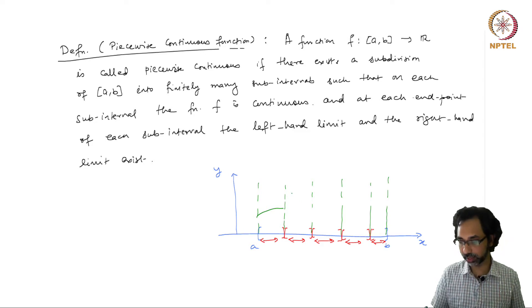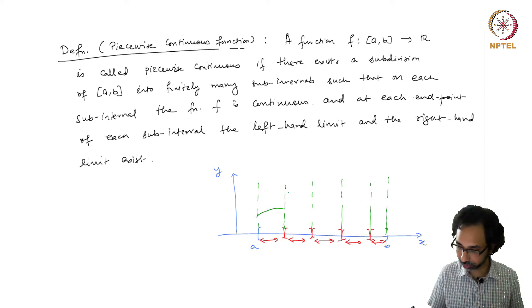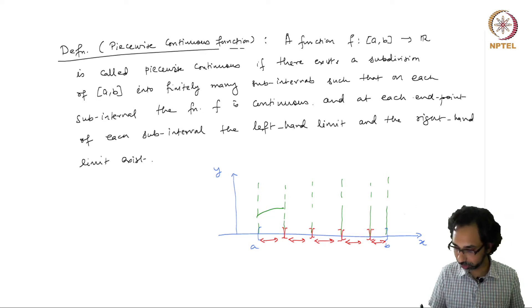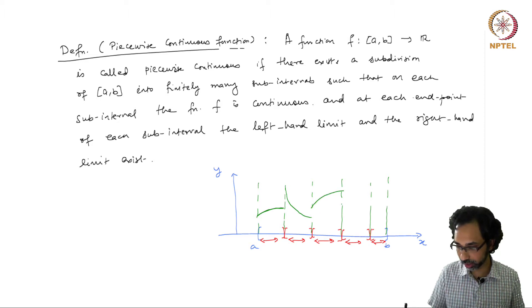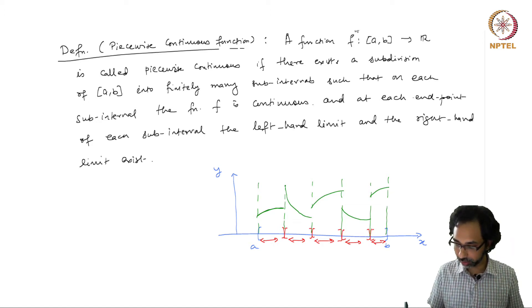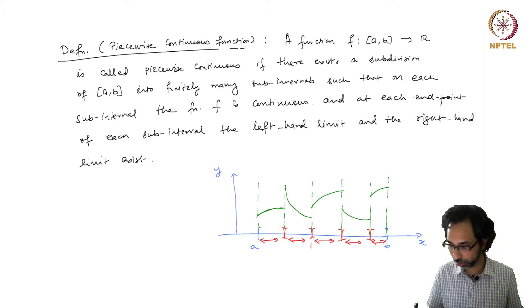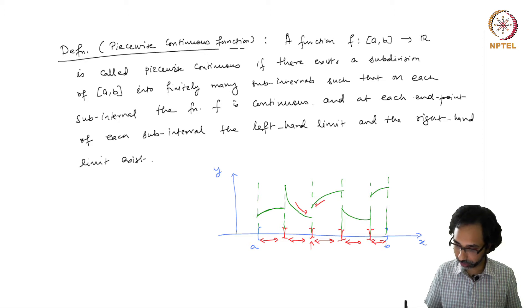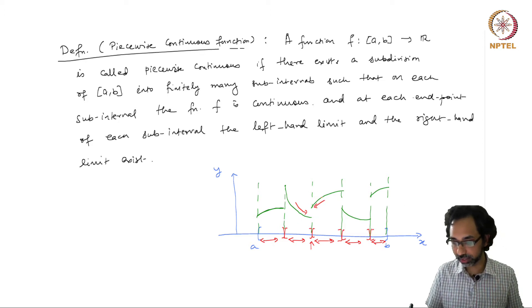On each piece, it is a continuous function and the left-hand and right-hand side limits exist, which means they are finite limits. The first chunk looks like this, but the second chunk may look like this, the third chunk may look like this, the fourth chunk may look like this. On each subdivision it is a continuous function, and when you approach any endpoint from the left or from the right, the limits exist but they may not be equal.